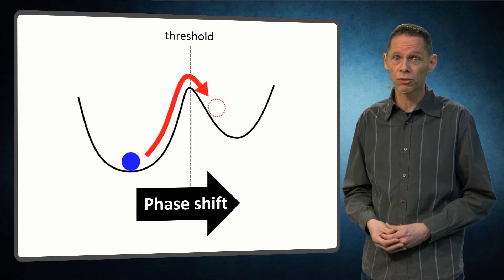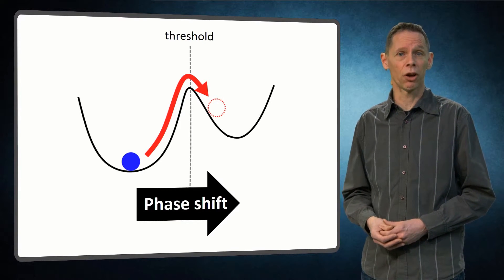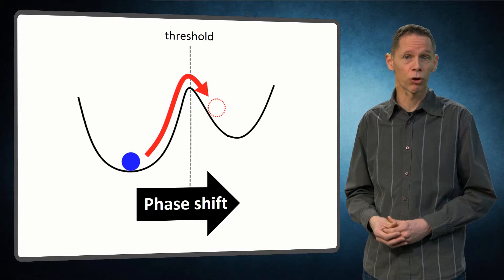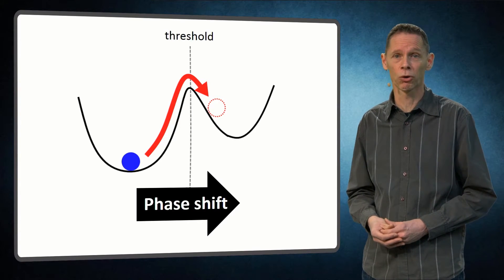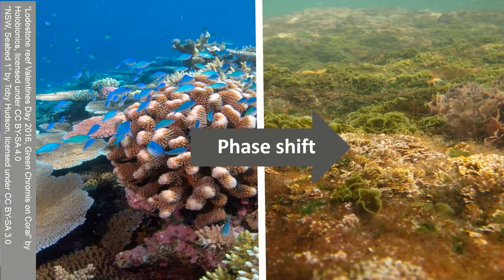In the previous video, we have already discussed such a phase shift. When small herbivores were removed from a coral reef, the ecosystem shifted from a coral dominated system to an algae dominated system.